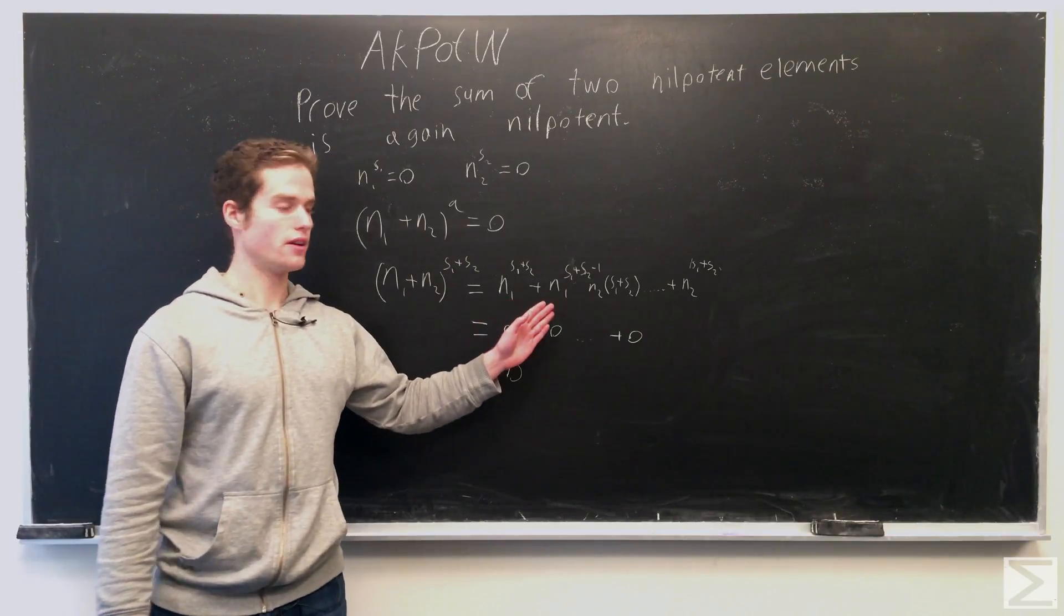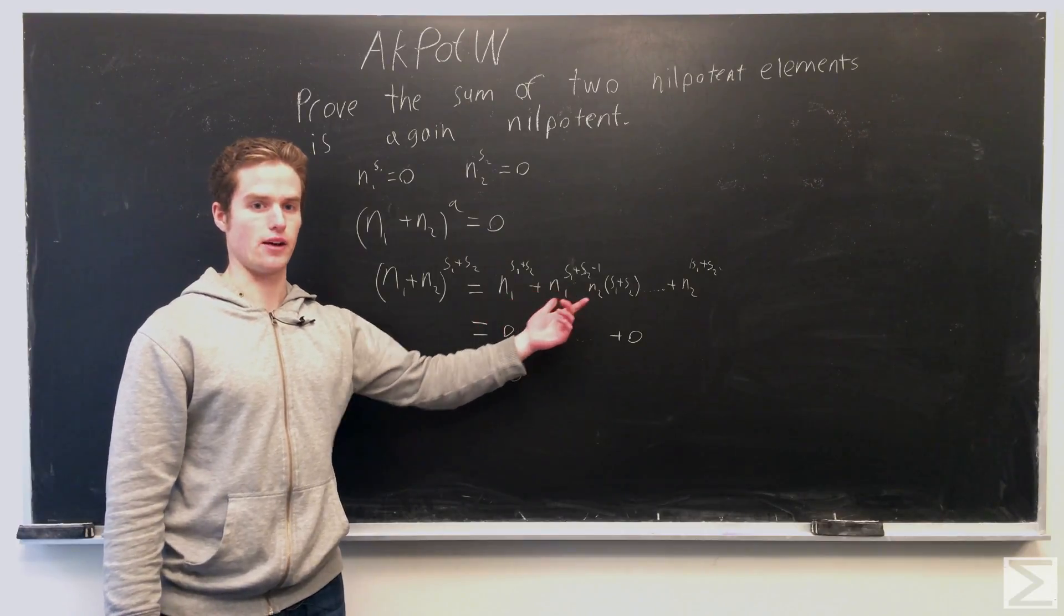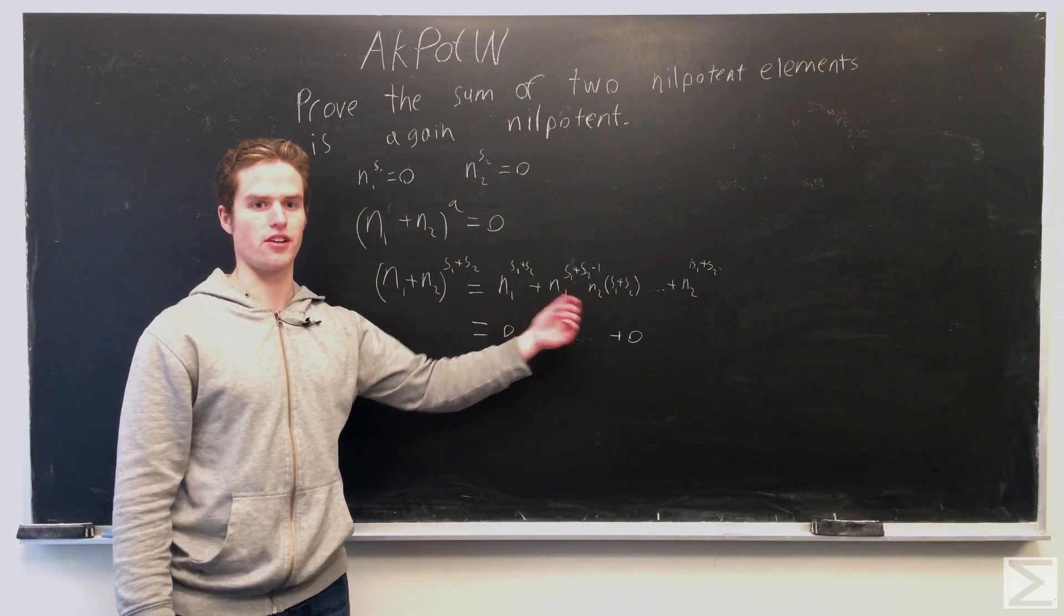And note that it needs to be commutative, otherwise we would have issues with multiplying it out. We just want to group all the n1s together and all the n2s together.